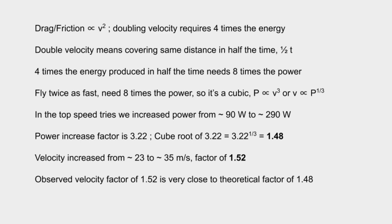A little bit of physics here: friction is proportional to the square of the velocity, meaning doubling the velocity requires four times the energy. It also means covering the same distance in half the time, which means we need eight times the power to fly twice as fast — so it's a cubic relationship between power and velocity.